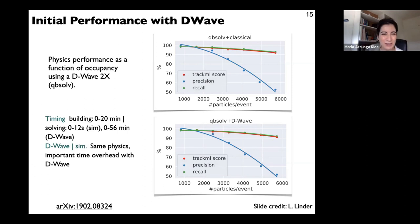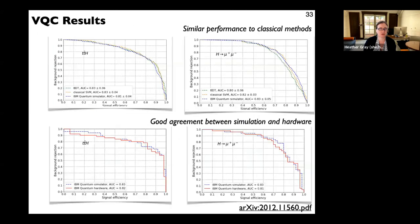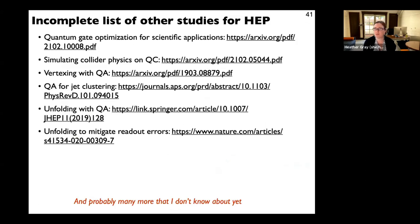Jason asks from the chat: a lot of time in HEP analysis is spent understanding, estimating, and propagating uncertainties — does quantum computing offer any efficiencies here, noting that unfolding is related? Heather responds: there are people thinking about unfolding on quantum computers, with some links provided near the end of the talk. For uncertainty propagation more generally, much of that work is mechanical — running systematic variations through reconstruction and making distributions — which could probably be done better classically. She hasn't heard of specific quantum computing approaches to this, but notes it would be wonderful to improve.